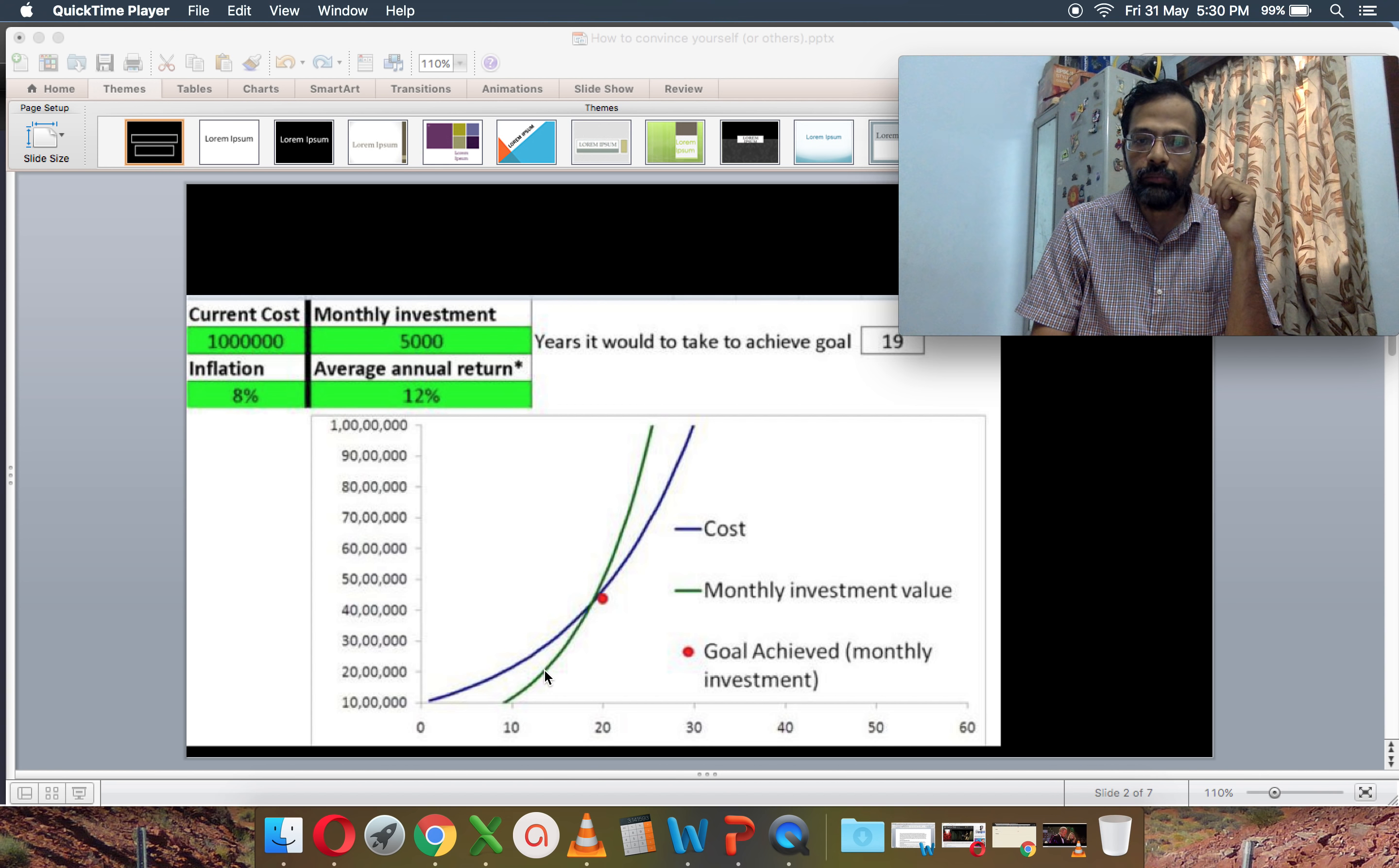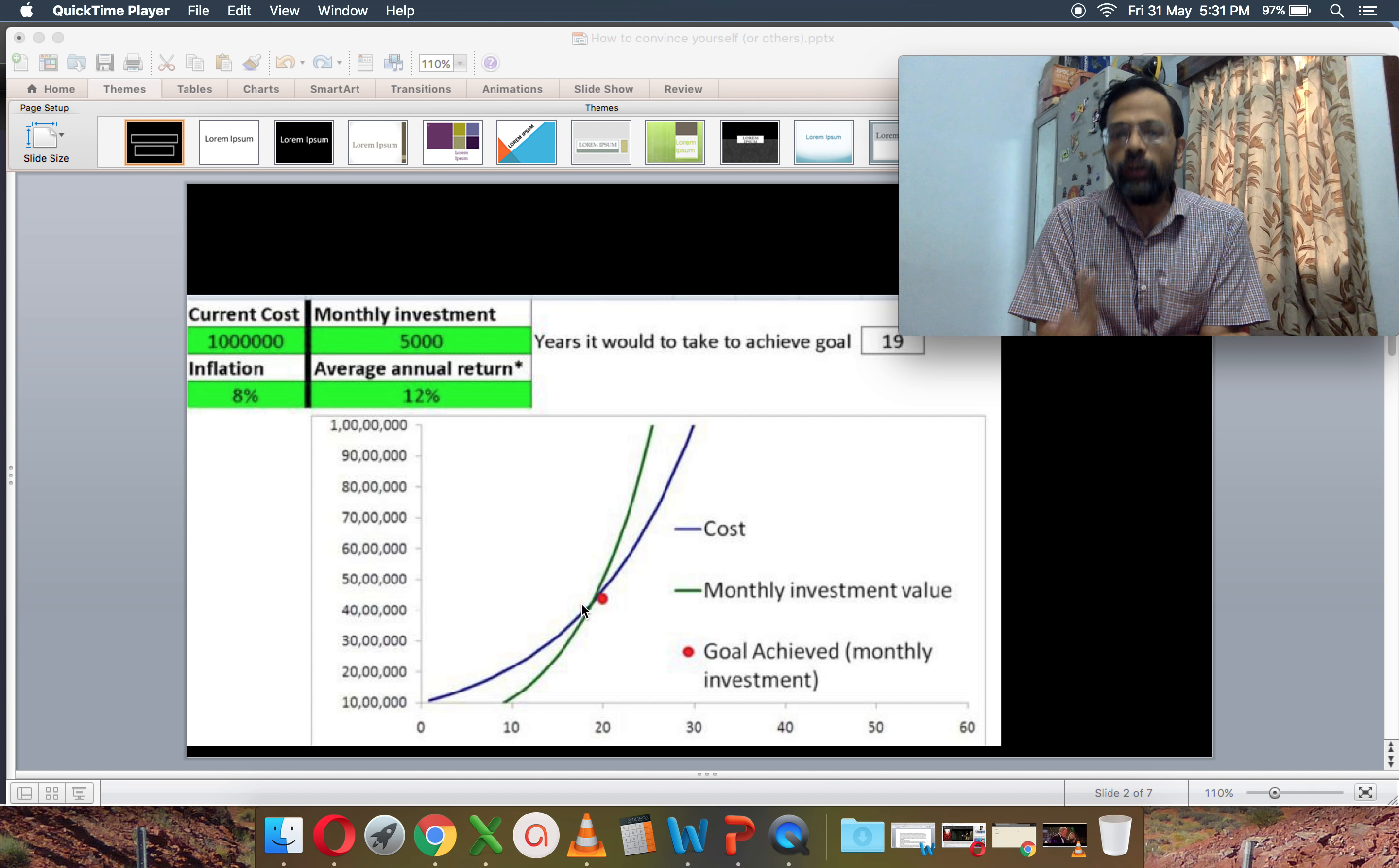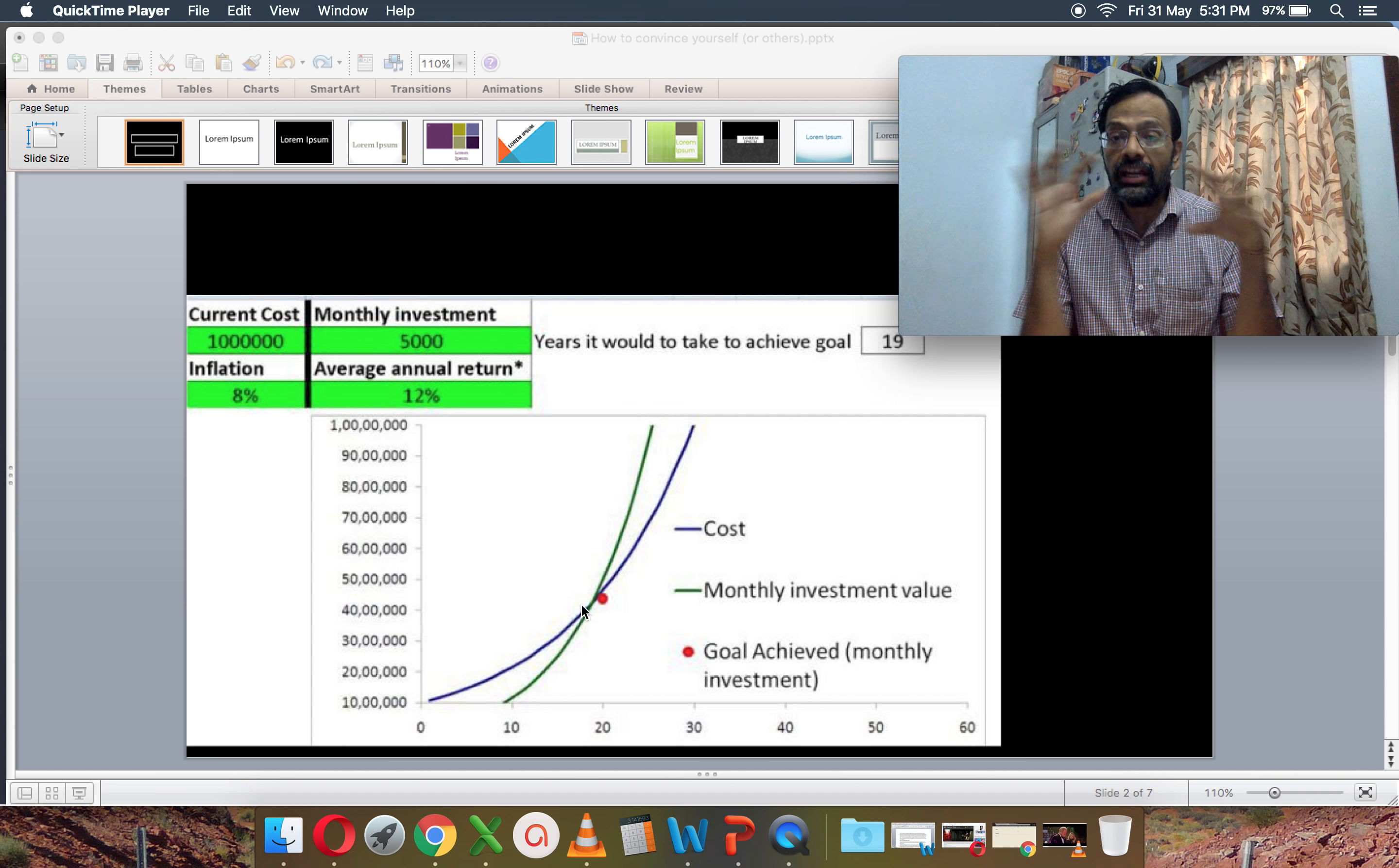So after 19 years, after 19 years of investing 5,000 rupees a month, your investment value will be equal to the cost. So the cost is moving up, that's the blue line. You start investing. It's coming from zero somewhere here and it's picking up. It will take 19 years for your investment to match, to be equal to the then cost of what you want to buy. So you will be able to buy whatever you want to buy anytime after 19 years because that's when the green line is your investment crosses the blue line. That's when your dream will be achieved. So that's the general idea. We will be using the same pattern for the next few slides.